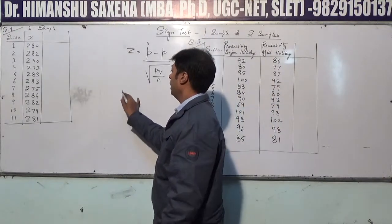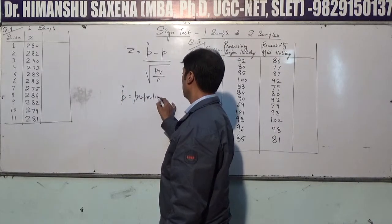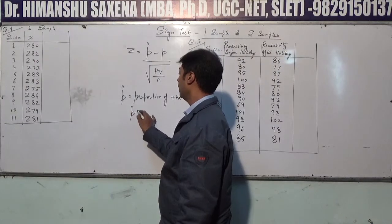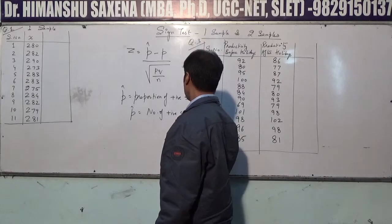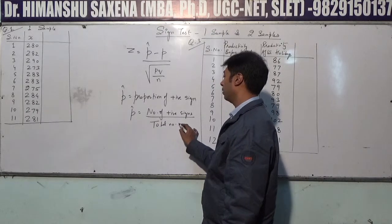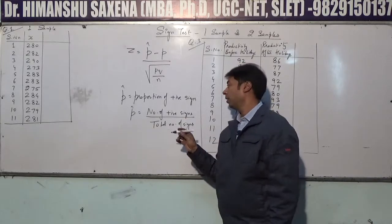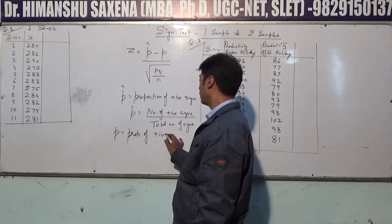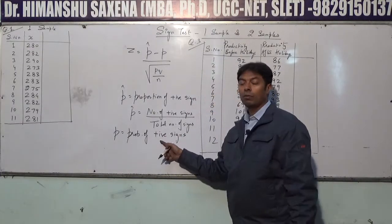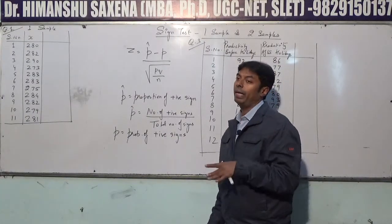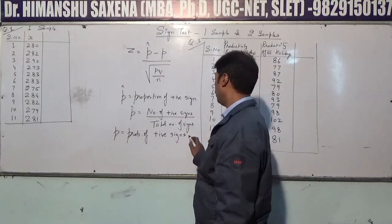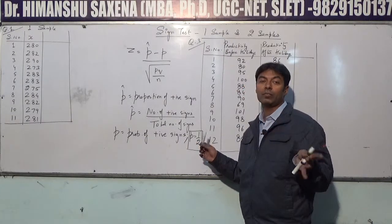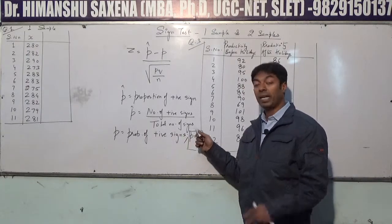Z equals P-cap, where P-cap is the proportion of positive signs — the number of positive signs divided by the total number of signs (positive plus negative). P is the probability of positive signs, which is always 1/2, because there are only two possibilities: positive or negative.